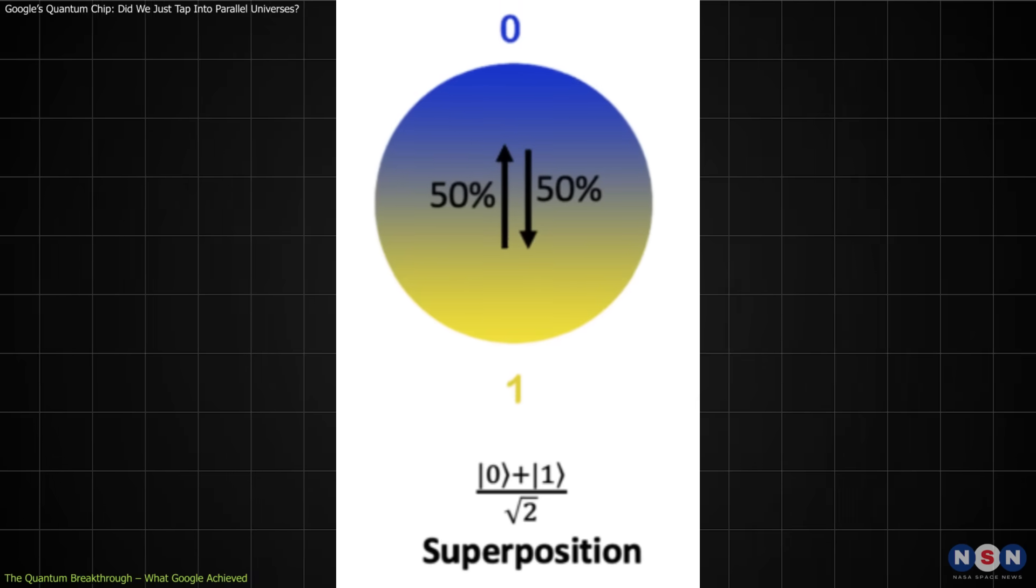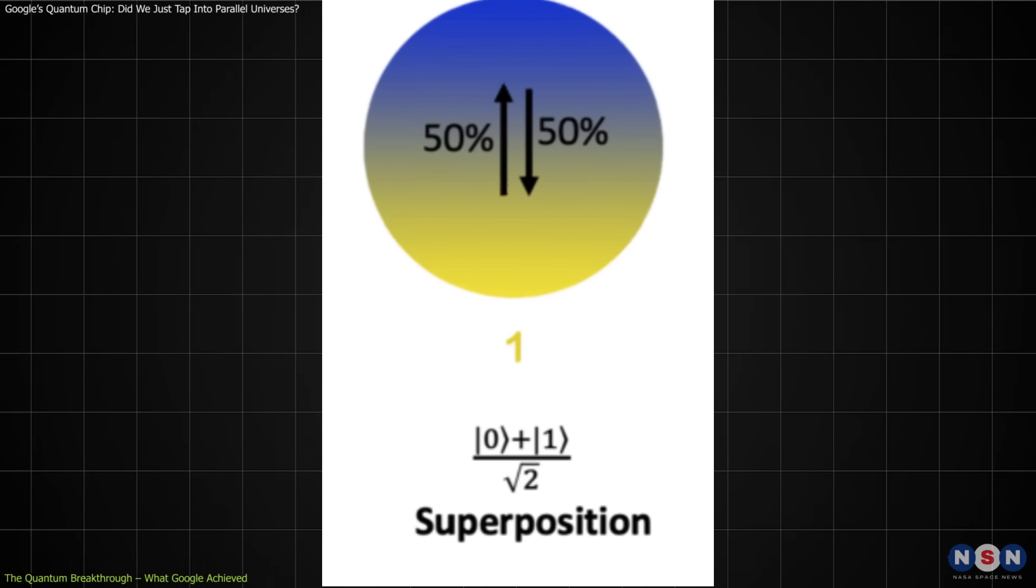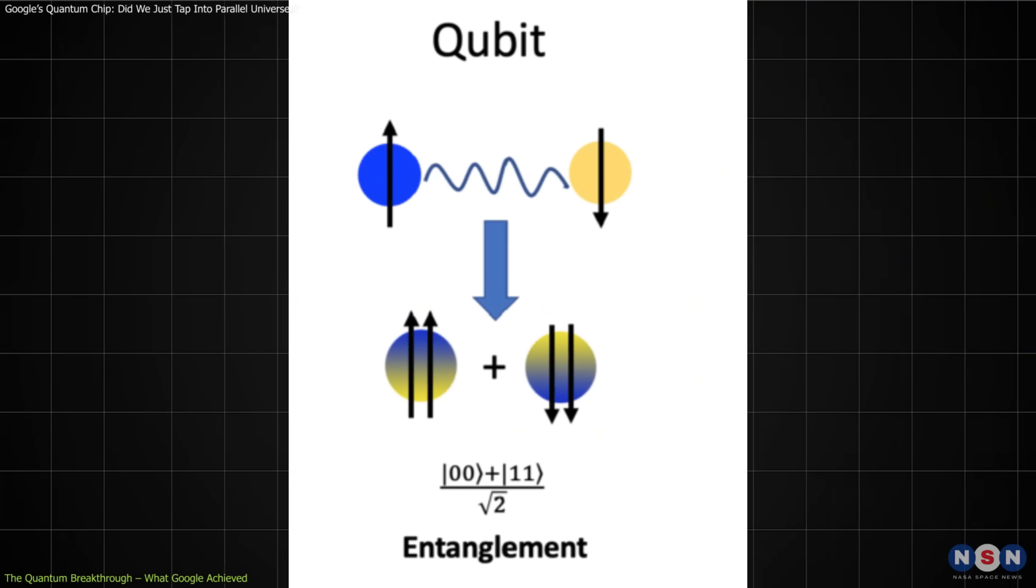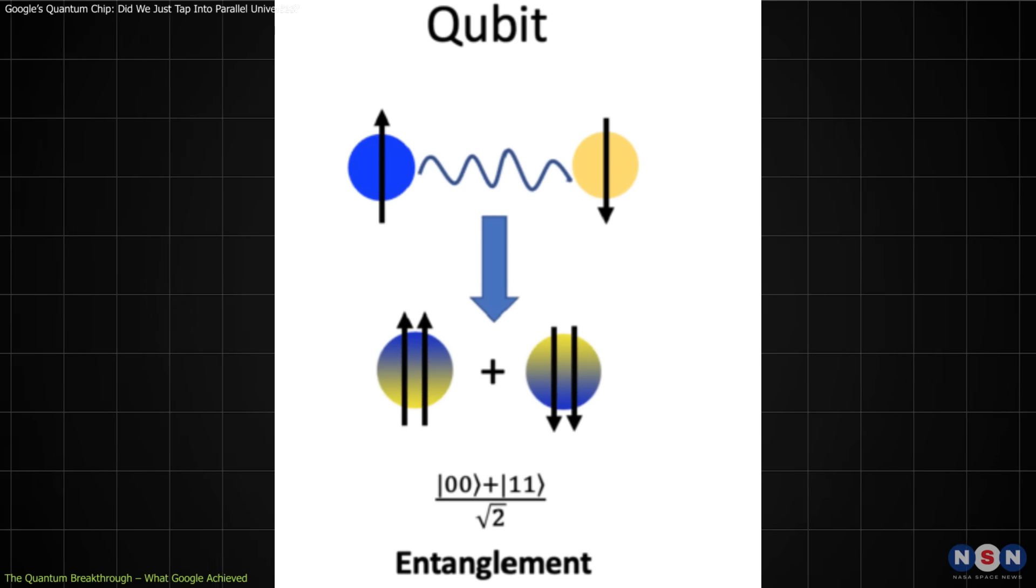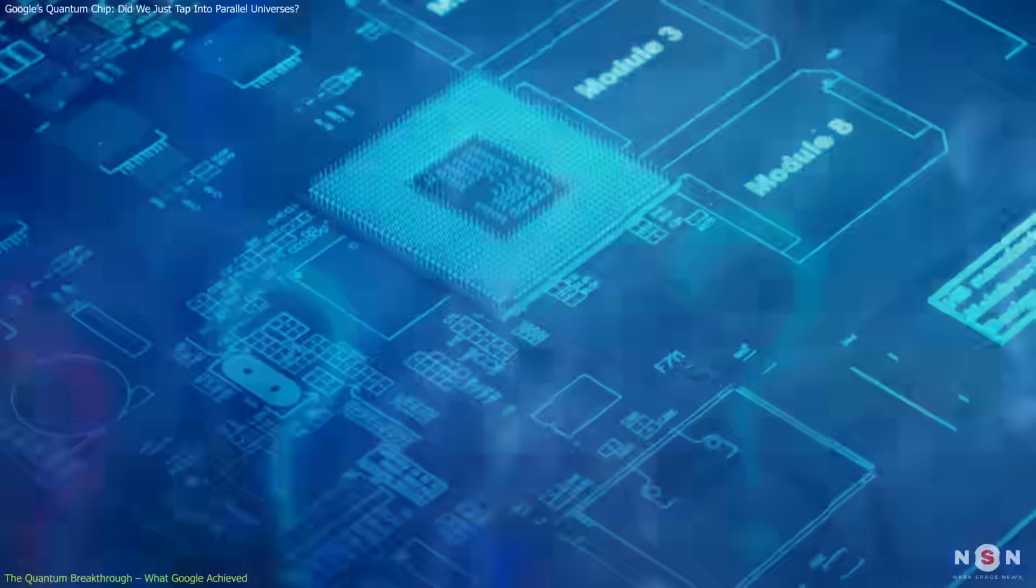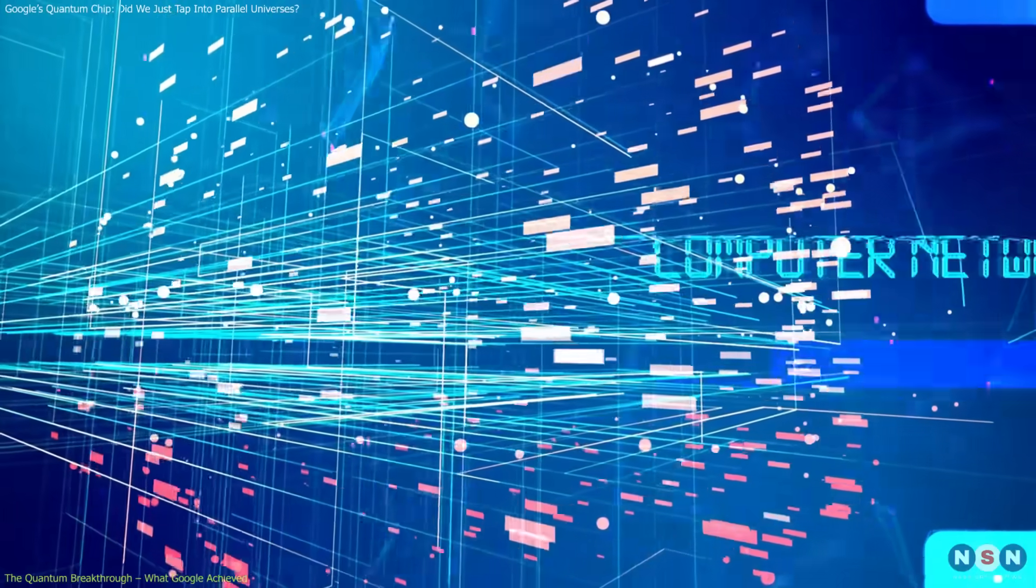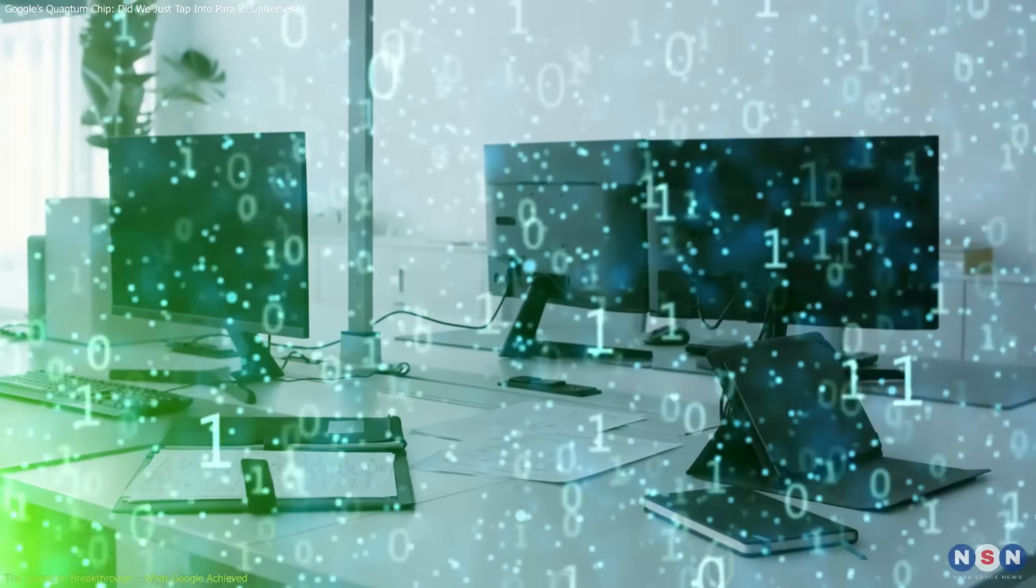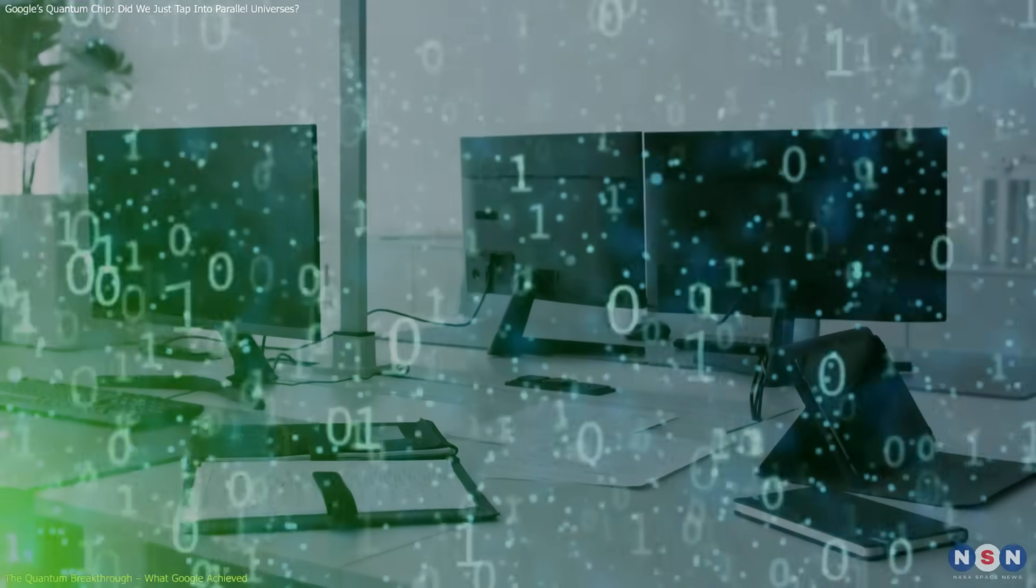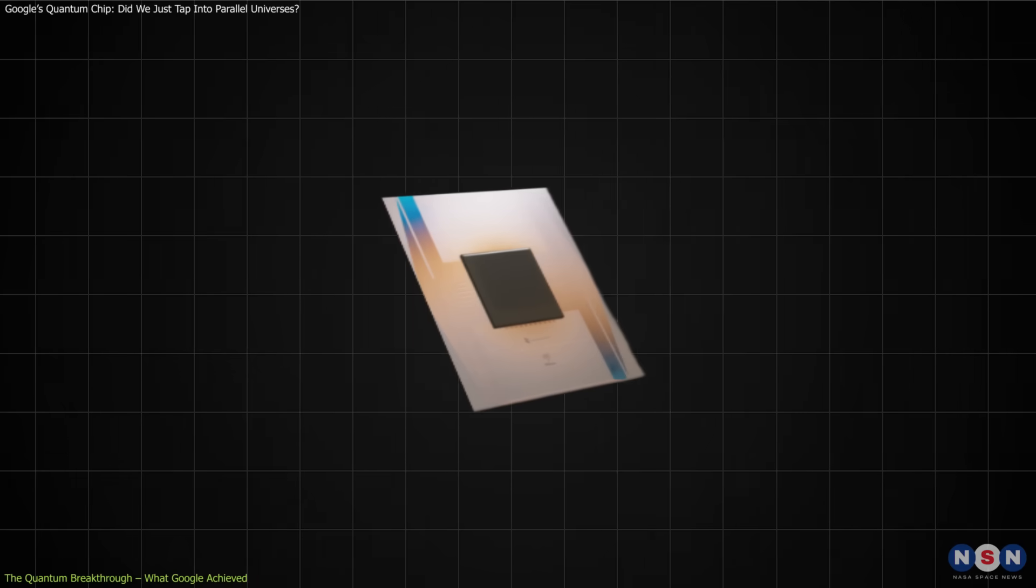Superposition means qubits can exist as both zero and one at the same time, while entanglement connects qubits so that changing one affects the others instantly, no matter how far apart they are. What does this mean? It means quantum computers can process an enormous number of possibilities simultaneously, something that classical computers simply can't do. And Willow's recent achievement takes this concept to a whole new level.